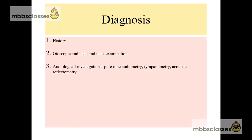How to diagnose? Diagnosis is mainly based on history. Next, it is based on otoscopic, microscopic, and head and neck examination. Head and neck examination is helpful to identify conditions which predispose to otitis media like cleft palate, Down syndrome, and Treacher Collins syndrome. In the otoscopic examination, pneumatic otoscopy plays a vital role because reduced mobility of the tympanic membrane is indicative of loss of compliance, which is seen in effusion of the middle ear. We also perform audiological investigations like pure tone audiometry, tympanometry, and acoustic reflectometry.